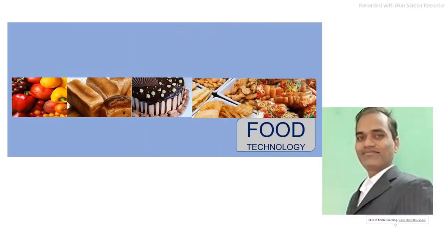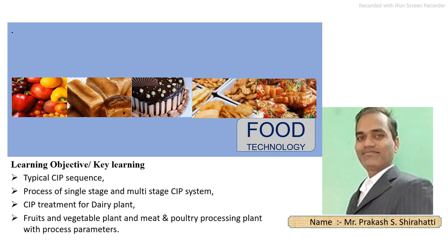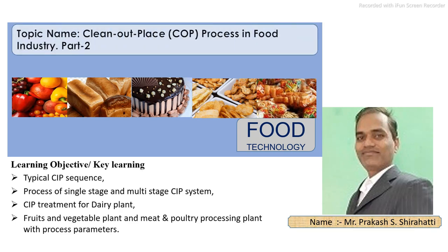Welcome to all of you. I am Prakash Sharati. Today you will learn the CIP system in the food processing industry — that means Cleaning In Place — which is used in the food industry for the cleaning process. In this video, you will learn the typical CIP sequence, single-stage and multi-stage CIP systems, and specific applications in dairy processing, fruits and vegetable processing, and meat and poultry processing plants in detail.